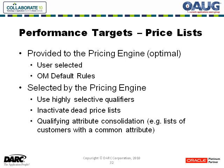The last target we'll take a look at is price lists. Remember that when a given line is priced, the very first thing the engine wants to do is assign a price list to that line and a list price as a starting point for any adjustments. There are two ways that can happen: either you provide a price list to the engine, which is the preferred method, or the price list can be selected.